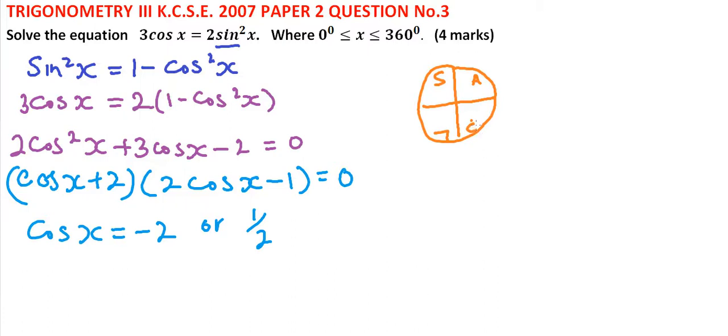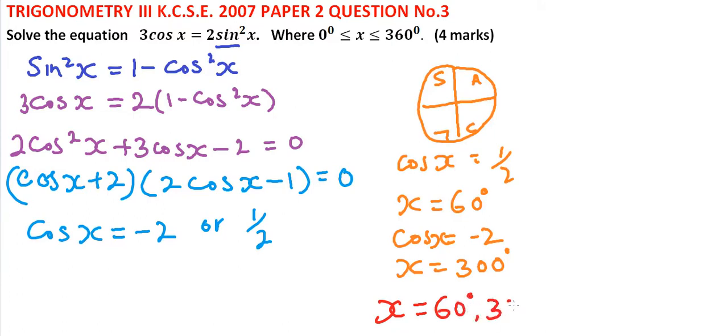Cosine is negative in the second quadrant and the third quadrant. So using the mathematical tables, you find that in the second quadrant, when cos x equals a half, then our x equals 60 degrees. Again, when x is minus 2, we have cos x equals minus 2, x equals 300 degrees. So these are the two angles that satisfy our equation: x equals 60 degrees or 300 degrees.